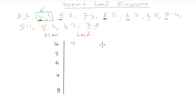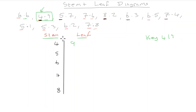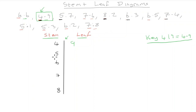Now we make our key. The key shows: four | nine = 4.9. The left-hand side represents the stem part and the right-hand side represents the leaf part. The line in the middle represents the dividing line. So the person reading the diagram knows four represents the digit before the decimal point and nine represents the digit after.